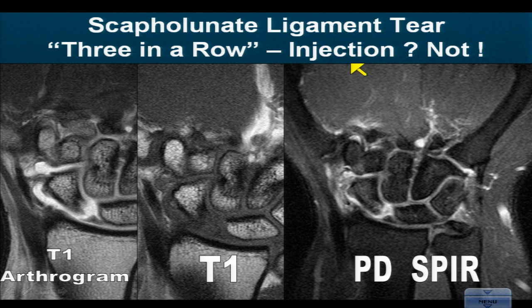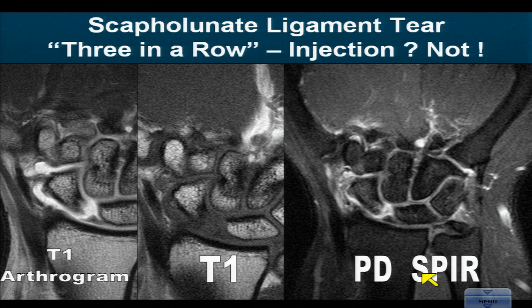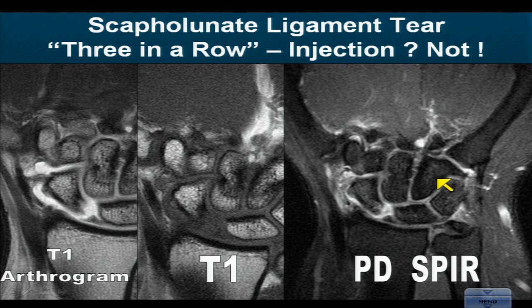The proton density SPIR — the heavily water-weighted sequence — demonstrates the same phenomenon. For non-MR practitioners and clinicians, don't worry too much about the names of these sequences. On a fat-weighted sequence, fat is white in the bone marrow and tissue signal in the joint tends to be dark. On a fat-suppressed sequence, the bone marrow fat is very dark, giving extreme sensitivity — you look at it more or less like a bone scan, looking for bright areas or hot spots, such as synovial inflammation or fluid along the margin of the scaphoid.